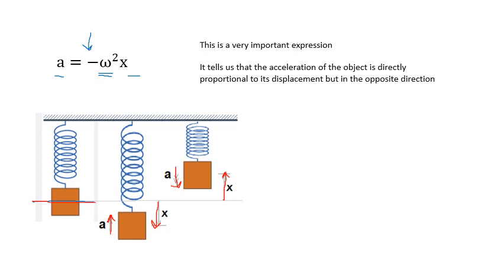This is actually our definition of SHM. When the acceleration of a body is always directed towards a fixed point, which is the equilibrium position, and is directly proportional to its displacement from it. That's the definition of SHM. Just remember this equation, a equals minus ω²x.